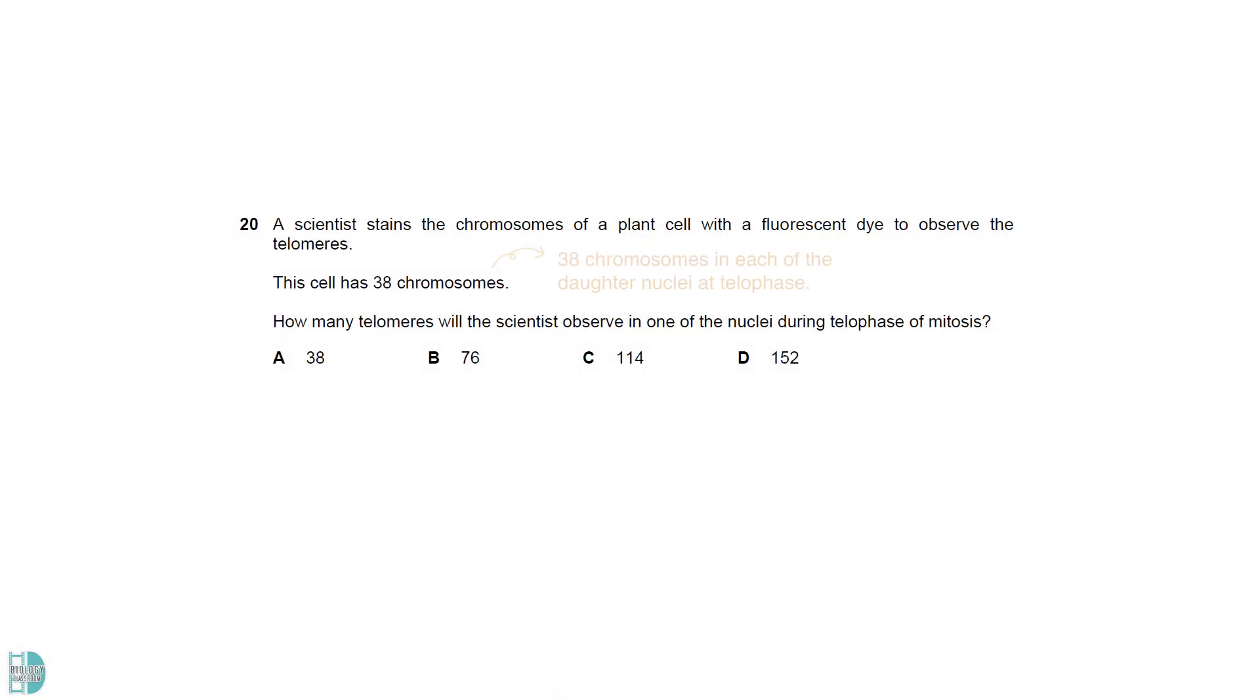If the cell has 38 chromosomes, at telophase, there will be 38 chromosomes in each of the daughter nuclei. The chromosomes have only one chromatid. So, each of them has two telomeres, found at the two ends.